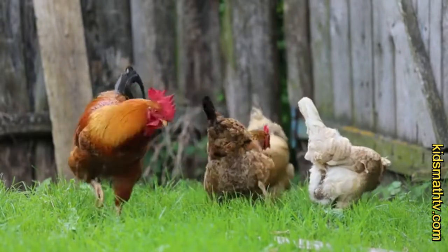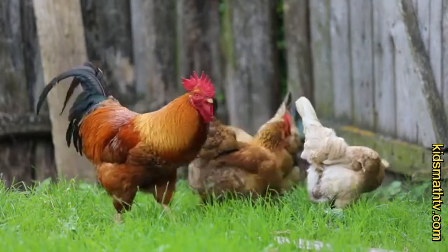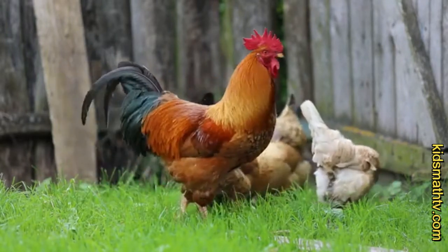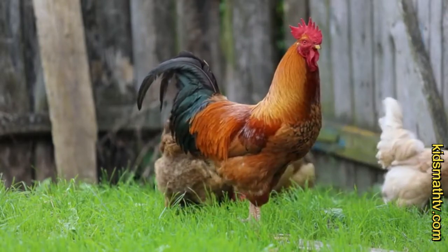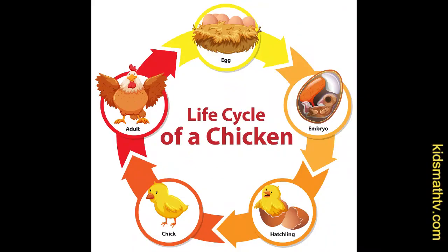Some breeds may live longer. Every chicken goes through three distinct phases: egg, chick, and chicken. Each stage undergoes transformations that usher in the next stage. Let's look at each stage in greater detail.